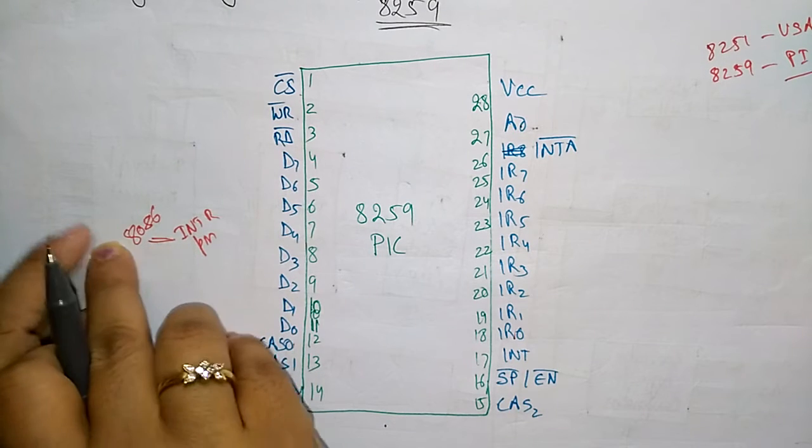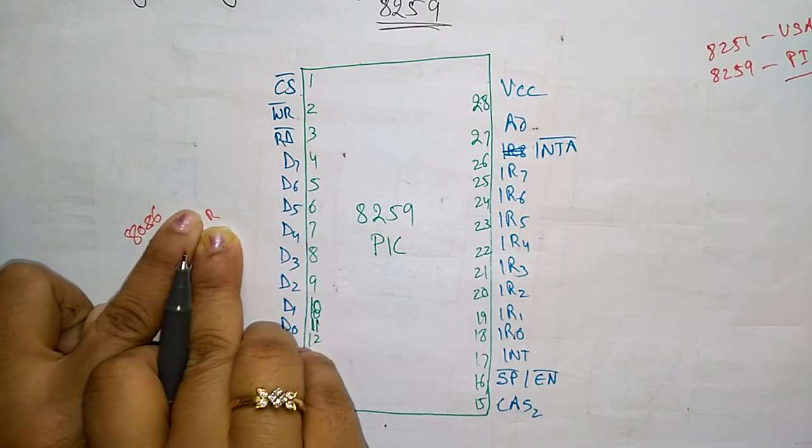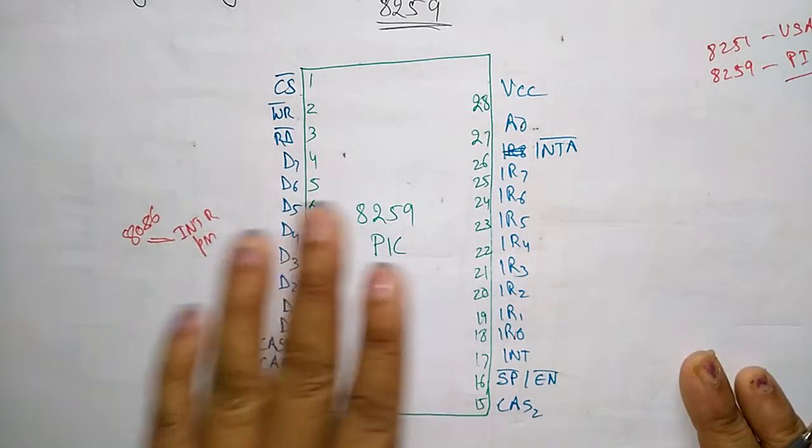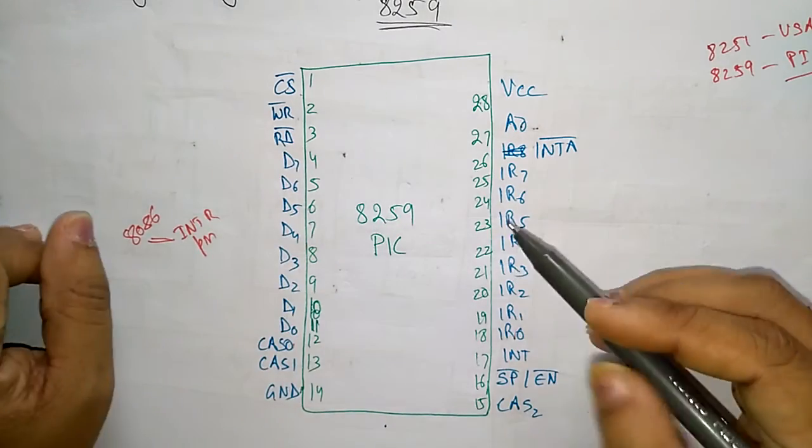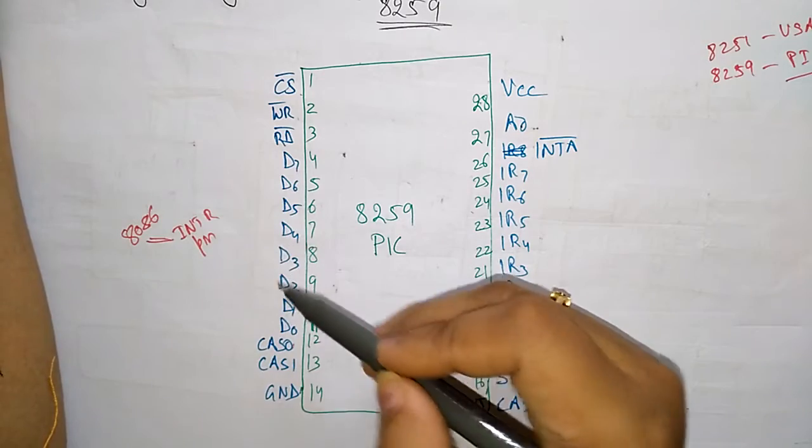Through microprocessor, and microprocessor will send, after the completion of it, the interrupt acknowledgment signal to this 8259. That is the process.